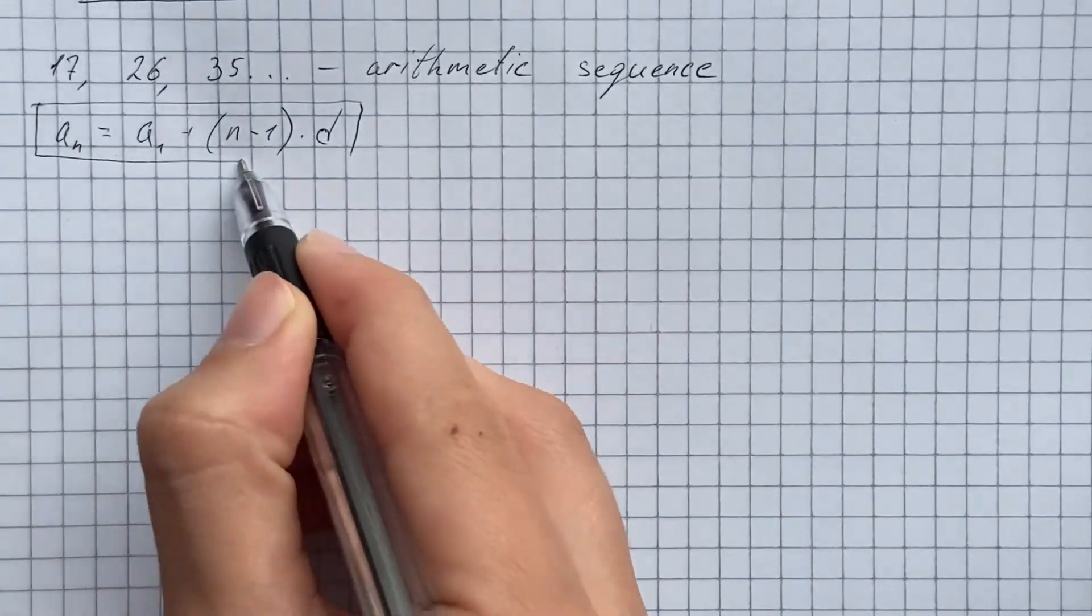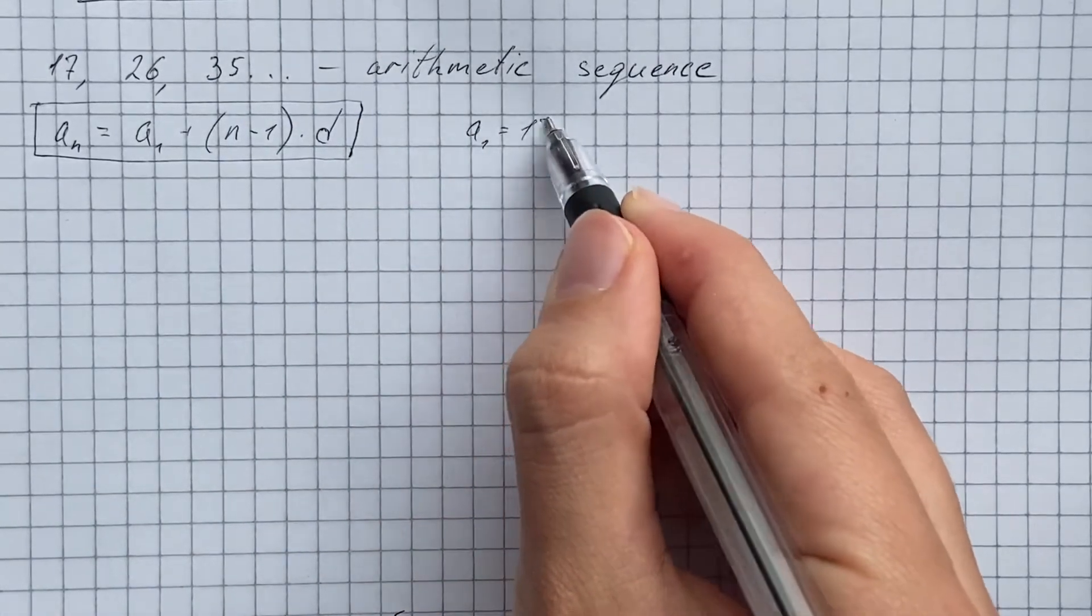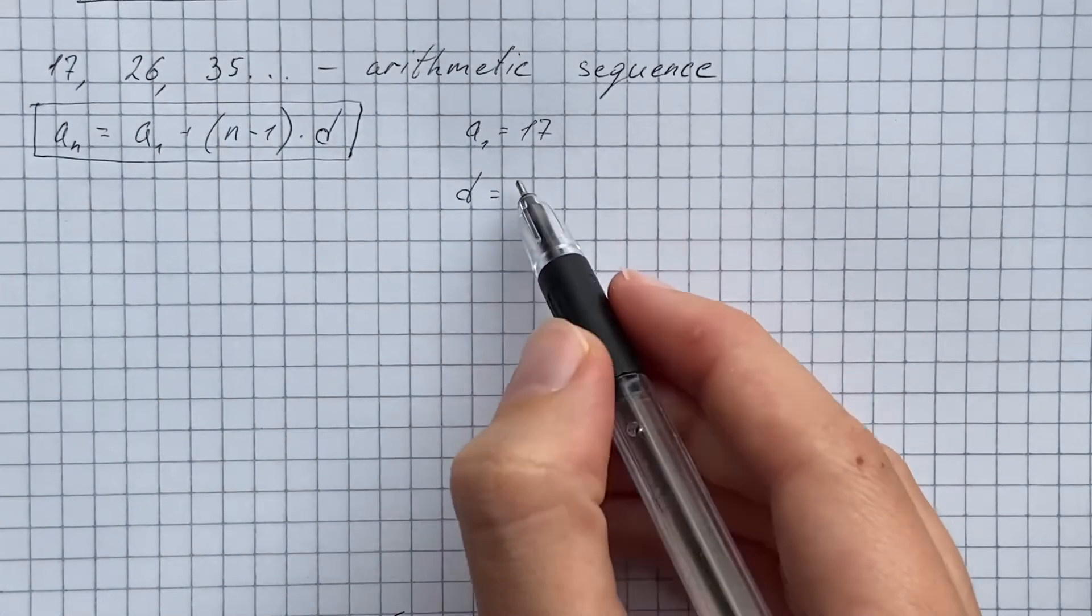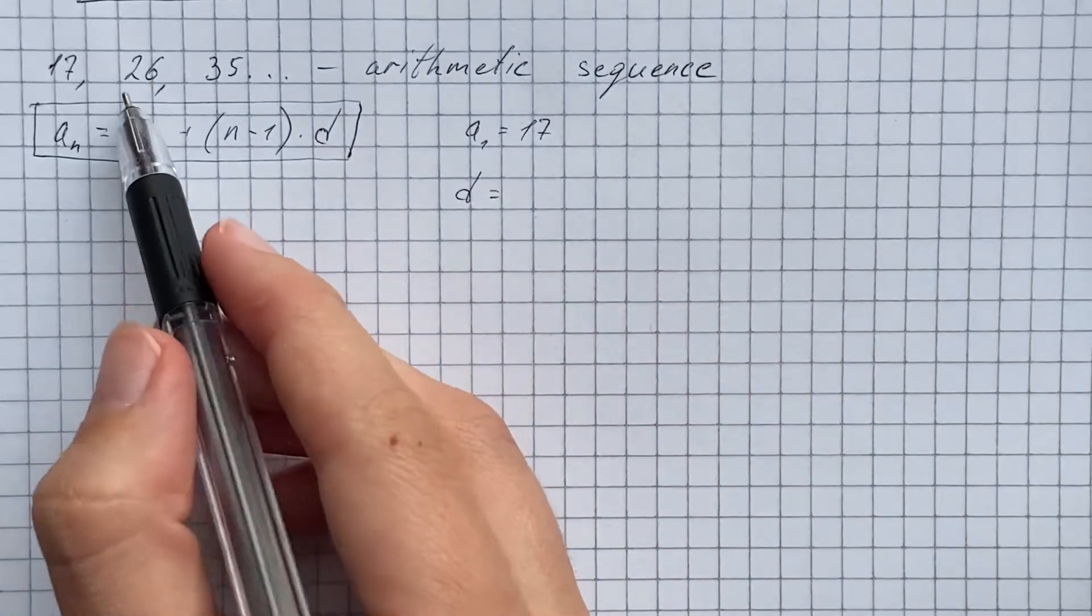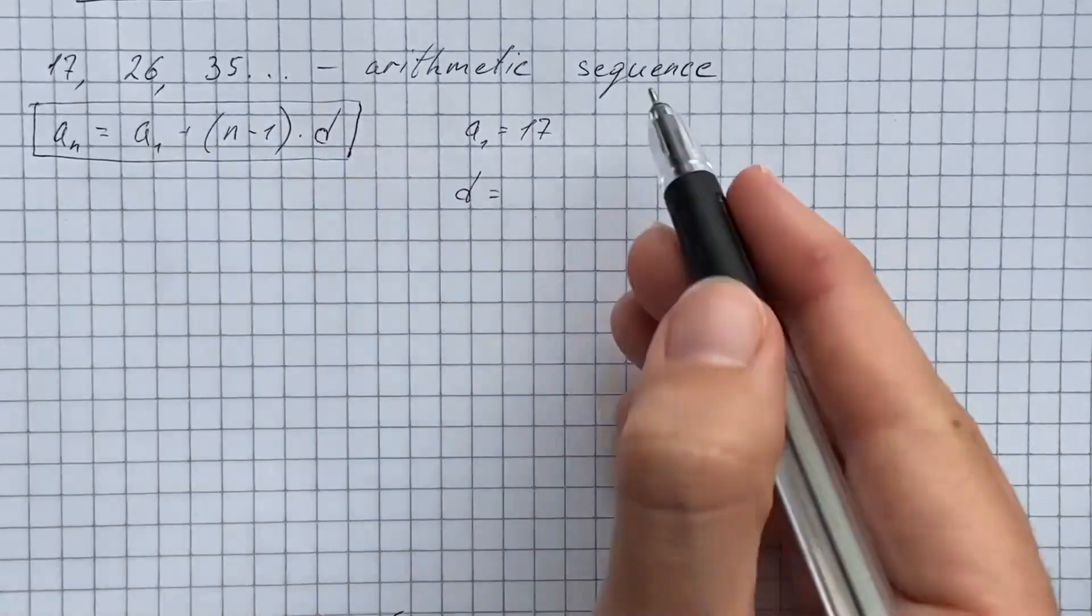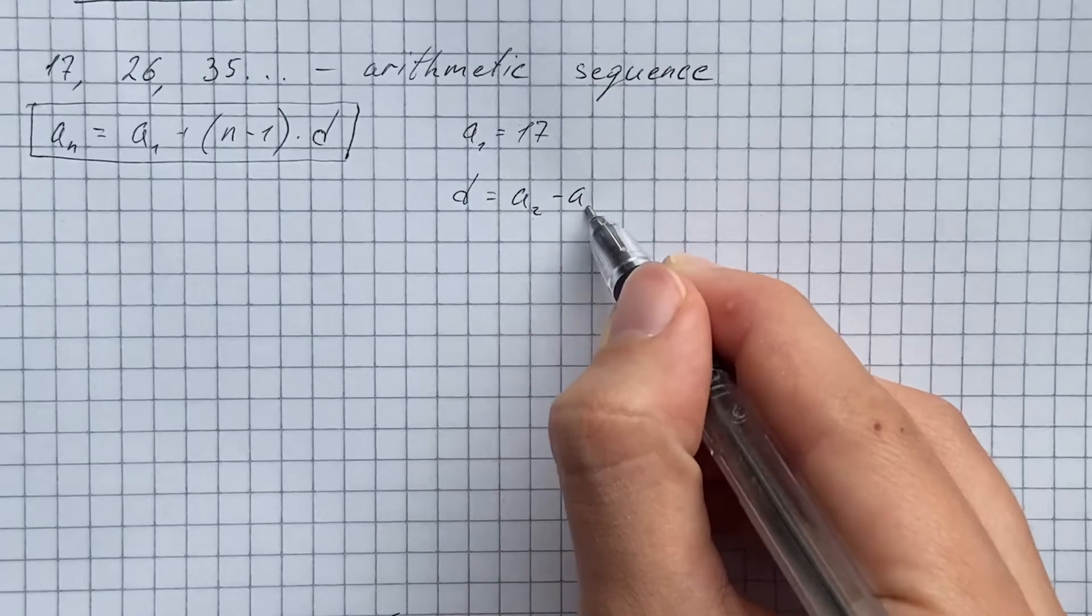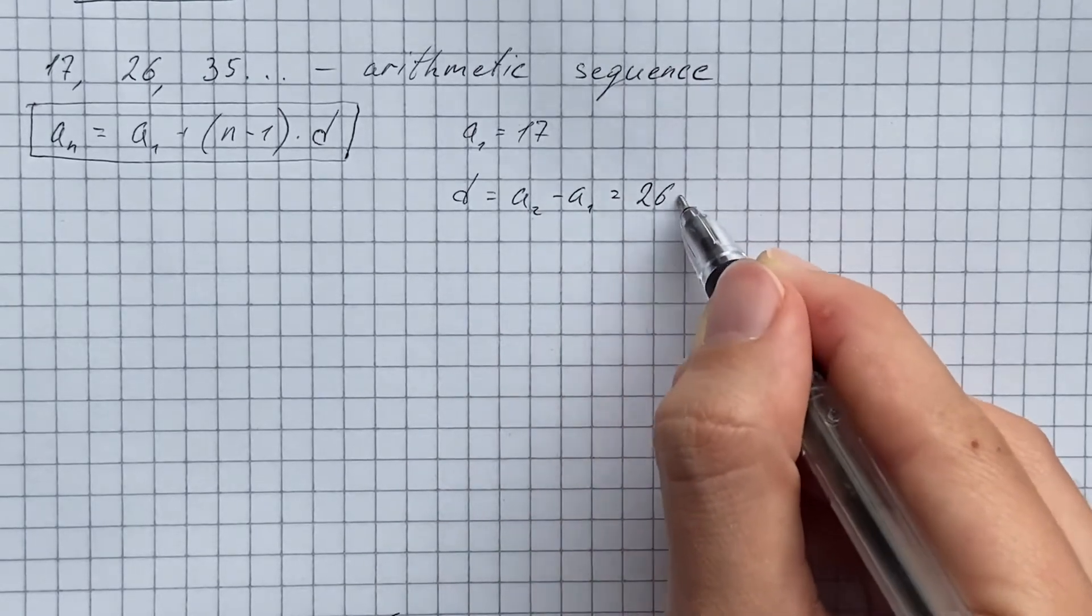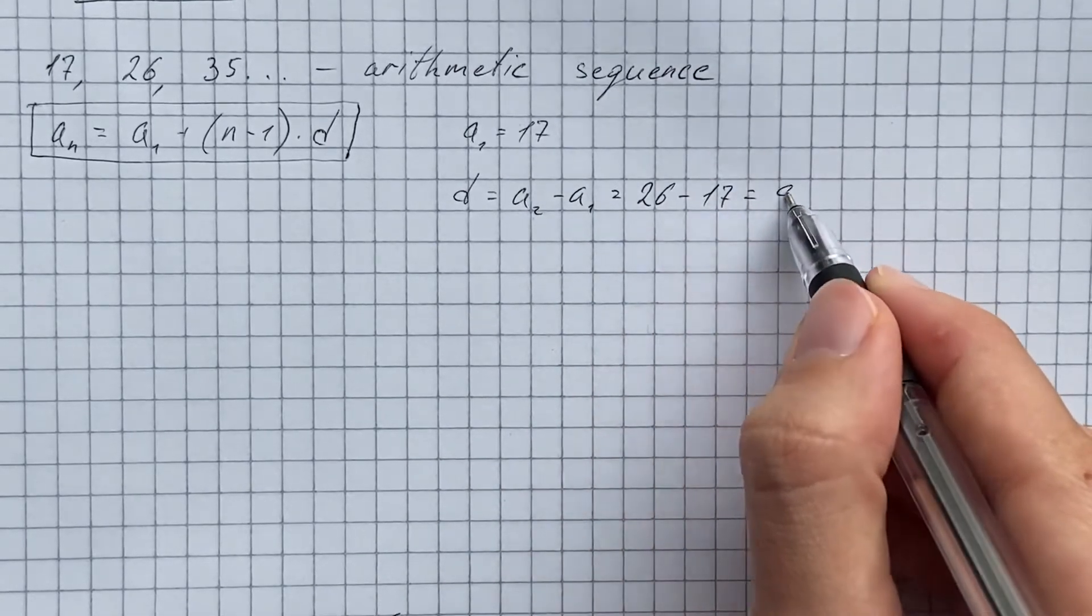In our case, the first term equals 17 and the common difference we're going to find by subtracting the first term from the second term. So that's going to be 26 minus 17, and that's going to be 9.